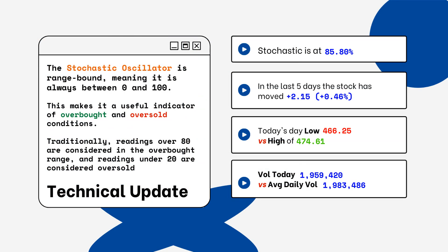You can see on the right side where the stochastic level is on this particular stock. This is a technical update — you want to look for overbought and oversold conditions. Readings over 80% are considered overbought, and readings below 20% are considered oversold. You want to be aware of this when looking at a particular stock.